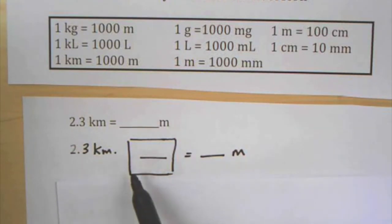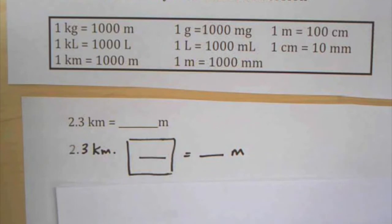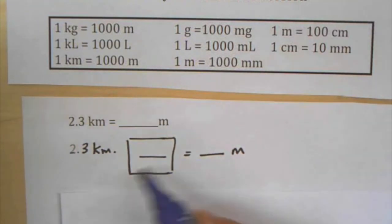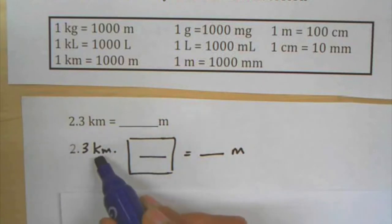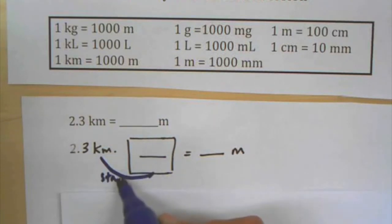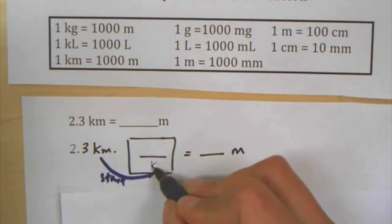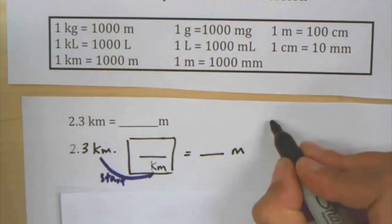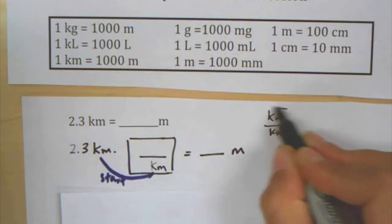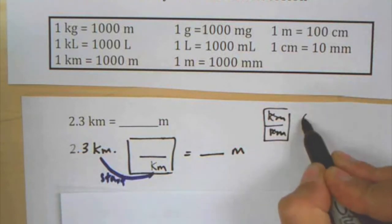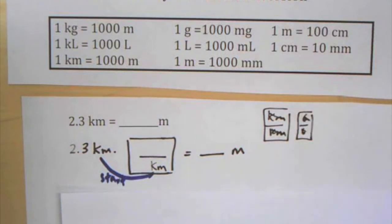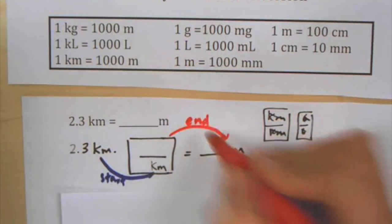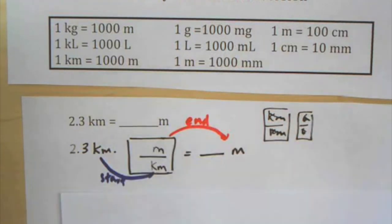When you're multiplying by a unit giant one, you want to set it up so that the units you don't want cancel out. I don't want kilometers in my final answer, so the units I'm starting with go in the denominator. Kilometers in the numerator and kilometers in the denominator form a fraction equal to one — just like six over six — so they cancel out. Then I introduce meters as the unit I want to end with.